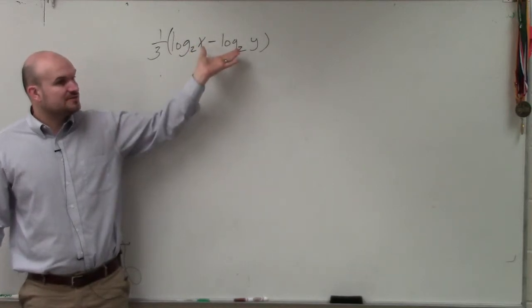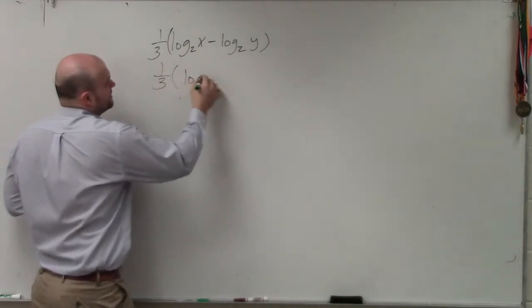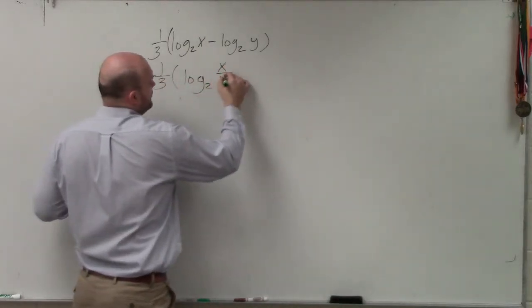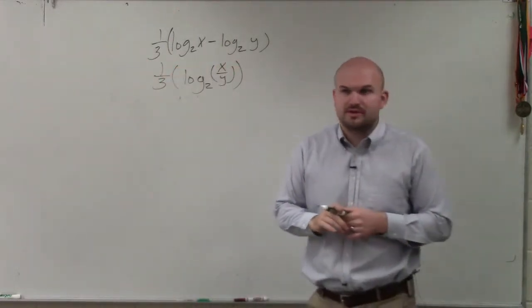where you can see it's subtraction of two logarithms, which represents the quotient for one logarithm. So I can write this as log base 2 of x over y. Does everybody see how I use the quotient property of logarithms there?